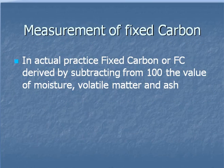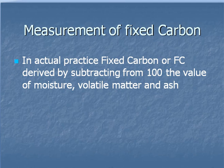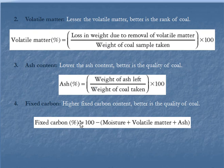Fixed carbon does not require a separate test. It is found by the difference method: Fixed carbon % = 100 − (% moisture + % volatile matter + % ash). Whatever result we get is reported as the fixed carbon percentage.